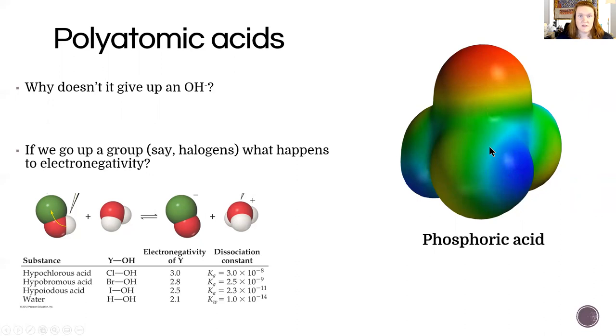If you think about like a Cl connected to an OH, we call this hypochlorous acid. The Cl has an electronegativity value of 3 and it has a Ka of about 10^-8. As we go down in electronegativity value, we see that that exponent - this Ka - gets smaller and smaller and smaller. So the bigger the electronegativity difference is between the chlorine and the oxygen, or the bromine and the oxygen, the higher the Ka is going to be. That makes sense because you have more of a blue area on the electrostatic map.